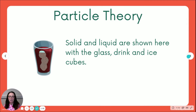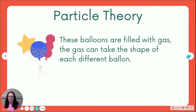Then you've got a solid glass and a liquid, with ice cubes within it — so you have a solid in a liquid. The glass is the solid, the liquid is within the glass, and there is another solid within that liquid. And then you've got balloons filled with gas. Look at the three different shaped balloons — it's the same gas, for example helium, and that gas has taken the shape of each balloon.